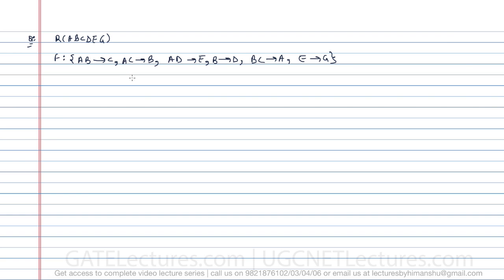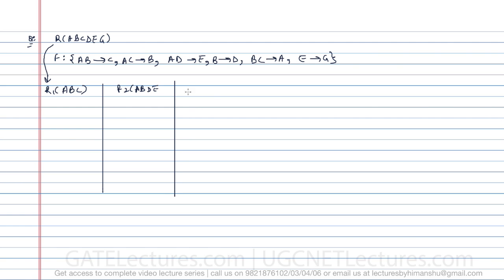These are the functional dependencies which are given. Now the relation is broken into three relations: R1 which has attributes A, B, C; R2 which has attributes A, B, D, E; and R3 which has the attributes E and G.